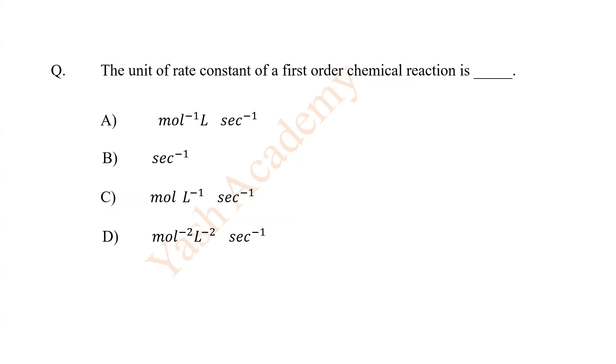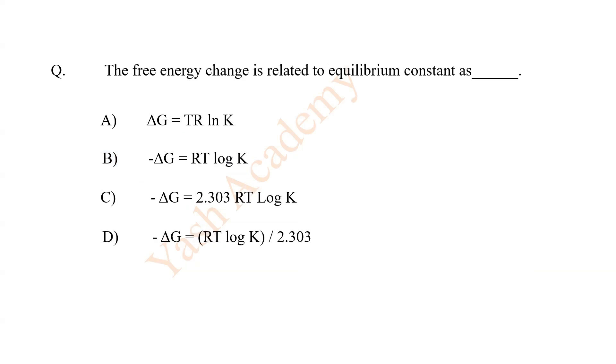The unit of rate constant of first-order chemical reaction is B, per second. The free energy change is related to equilibrium constant as C.